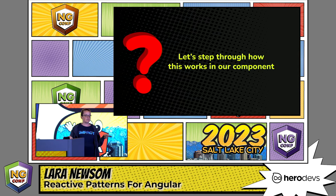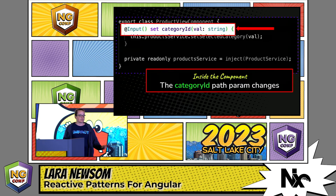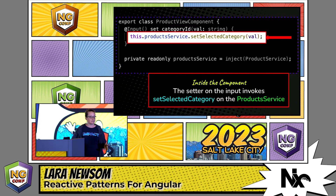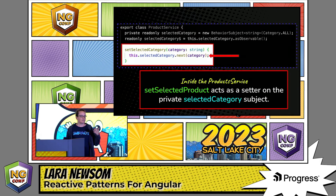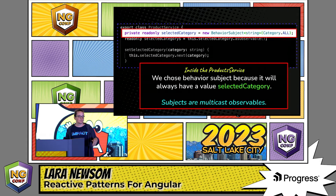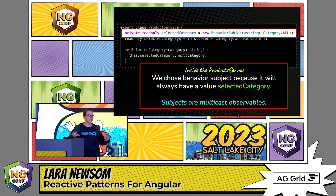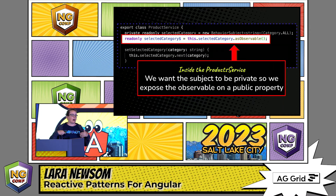Our input has a setter — it's going to invoke the setSelectedCategory method on our product service, passing that value to it. That calls next on a BehaviorSubject. We declare a private BehaviorSubject — if you're ever using subjects, you do not want to publicly expose those. BehaviorSubjects always have a value, and subjects are multicast so anything subscribing will always get the same value as everybody else at the same time. We publicly expose the observable through a public property.